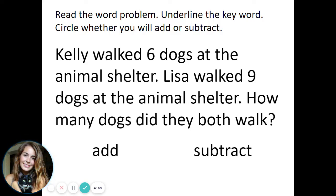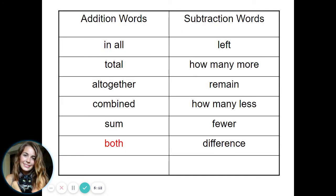Charlie walked six dogs at the animal shelter. Lisa walked nine dogs at the animal shelter. How many dogs did they both walk? Both would mean putting the two numbers together - that's addition. And then of course, if you're asked to add or subtract, you need to add or subtract.